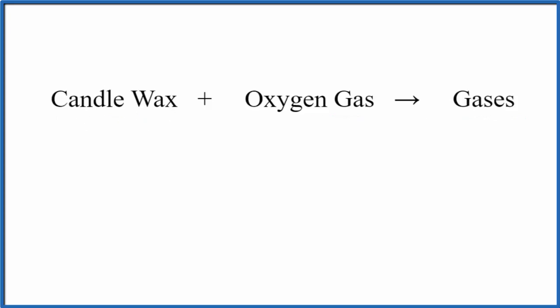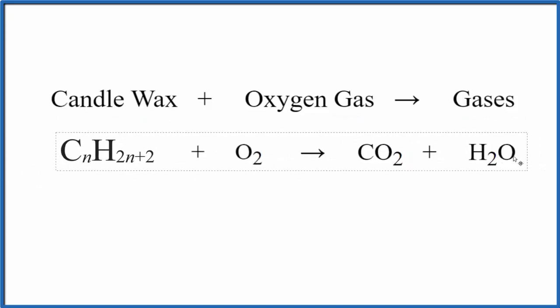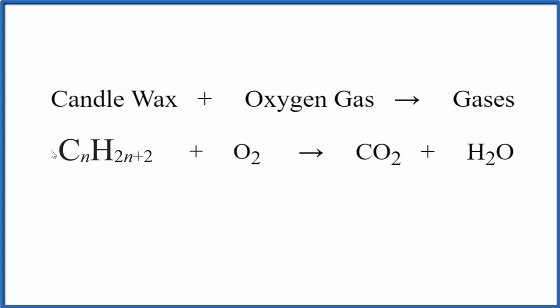So we could write it like this: we could say our carbons and hydrogens, this is the formula for an alkane, CnH2n+2, plus our oxygen gas O2. That gives us these gases: carbon dioxide and water.